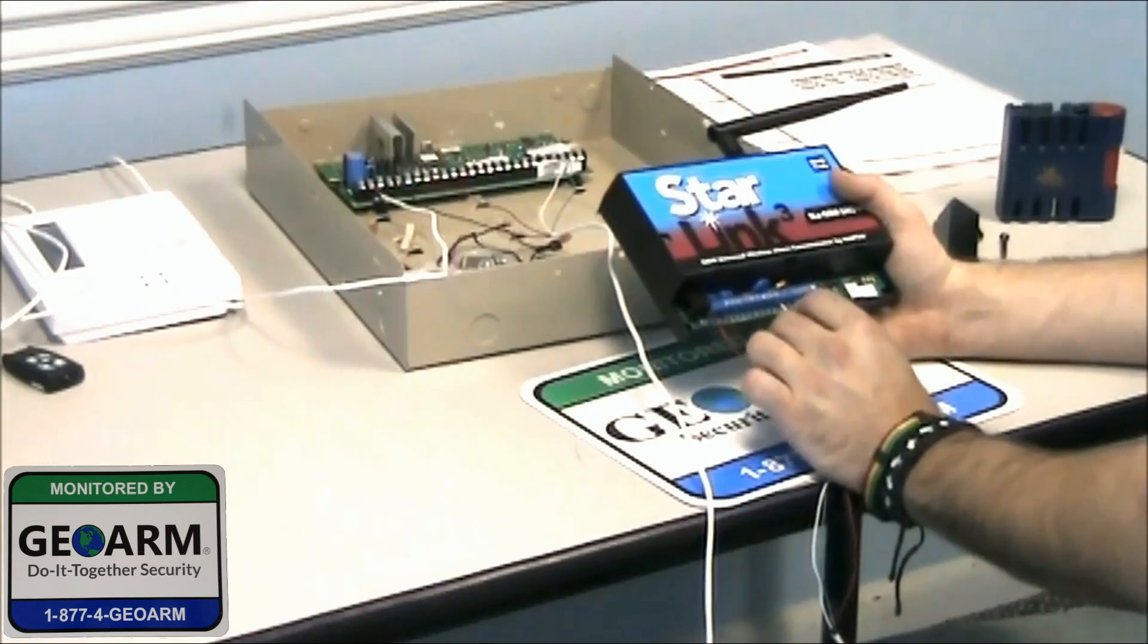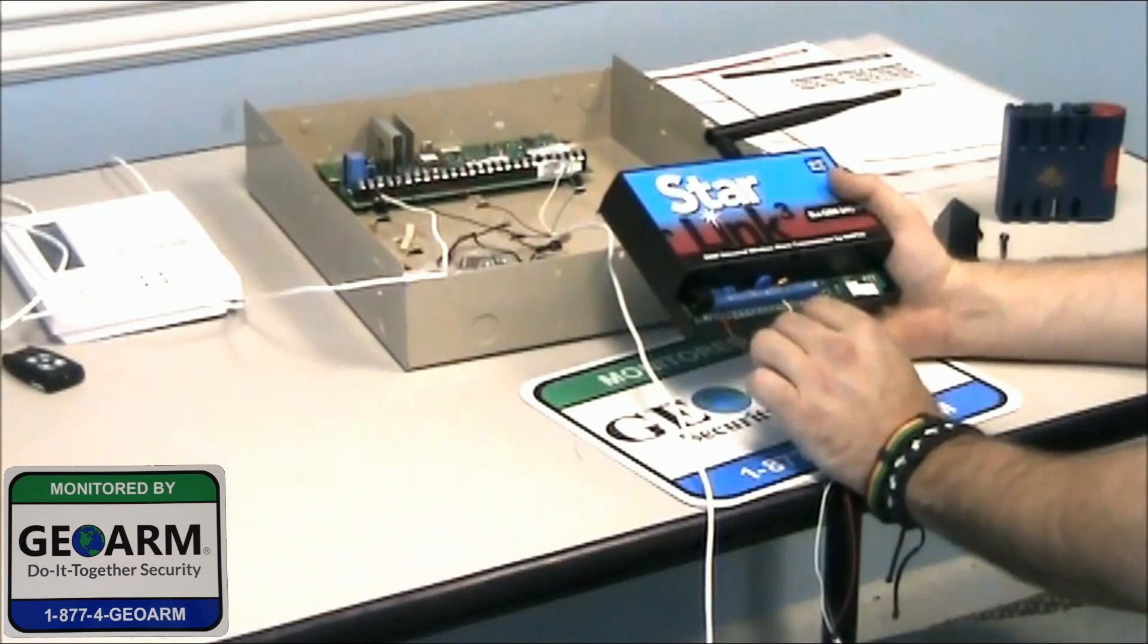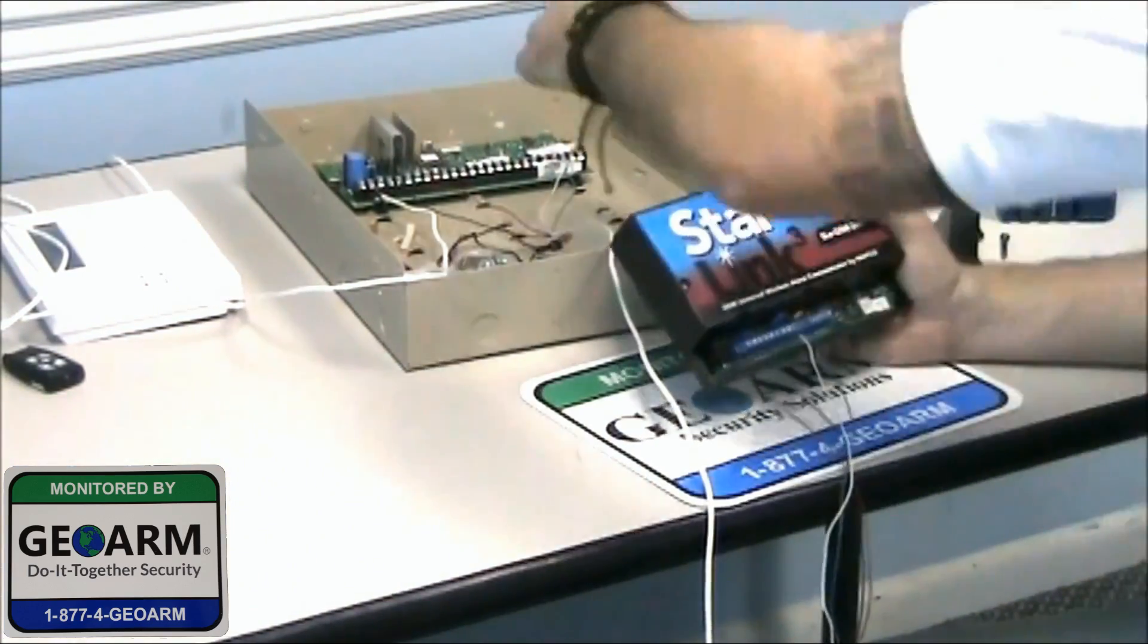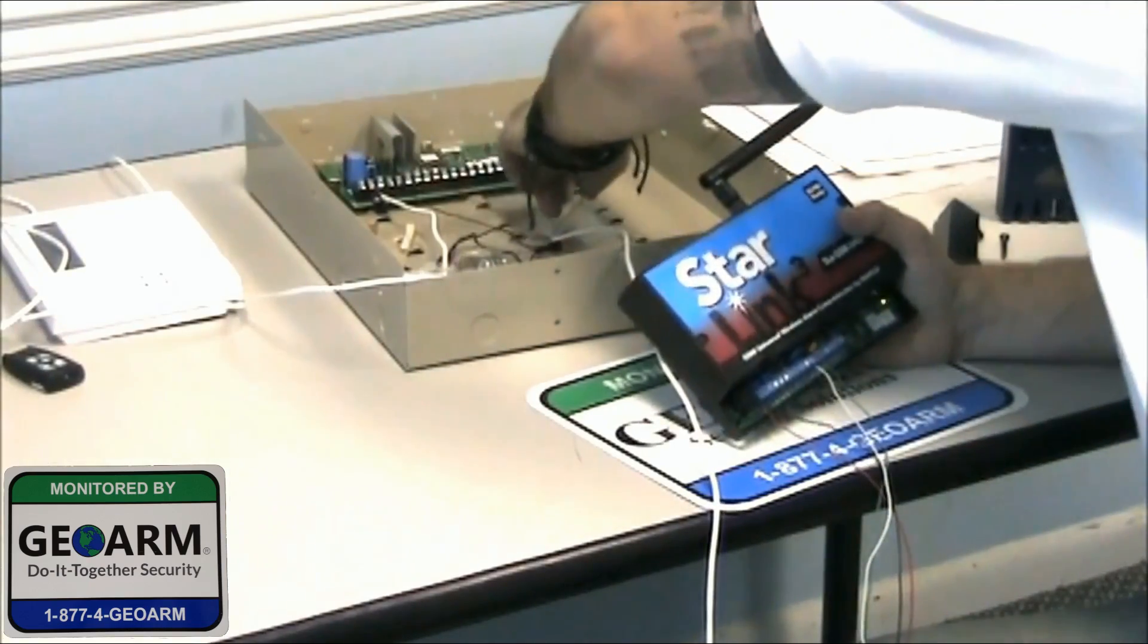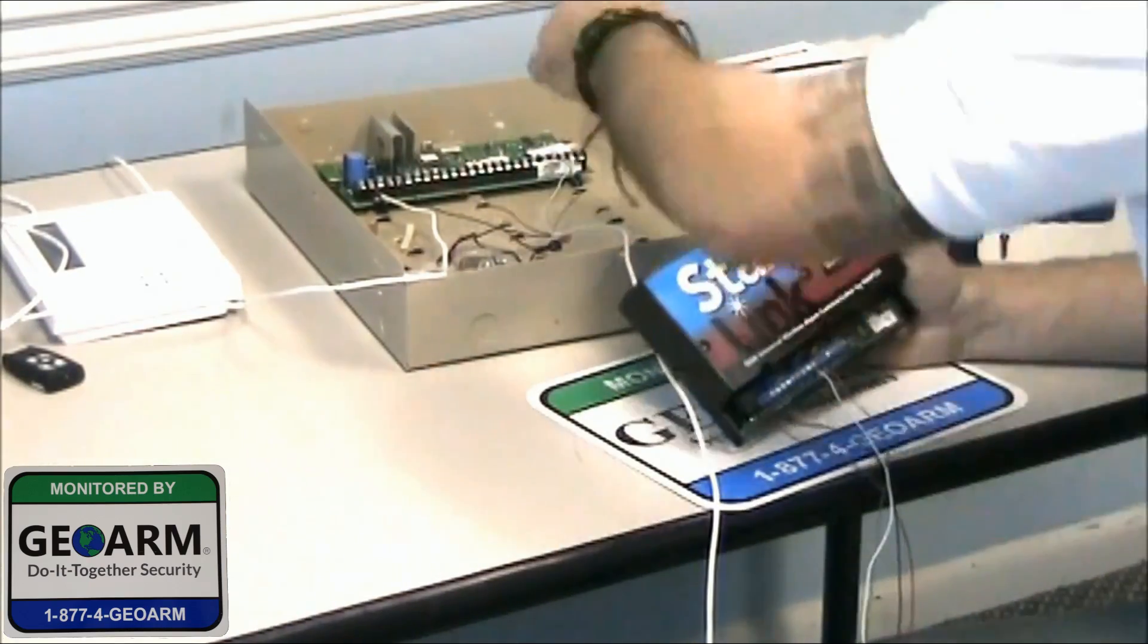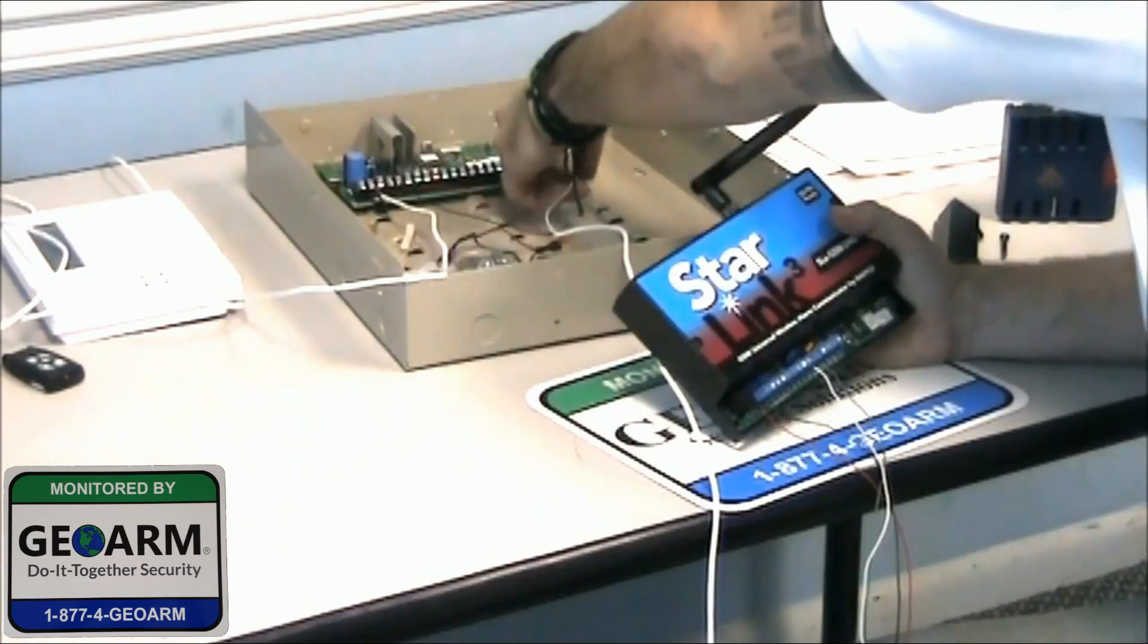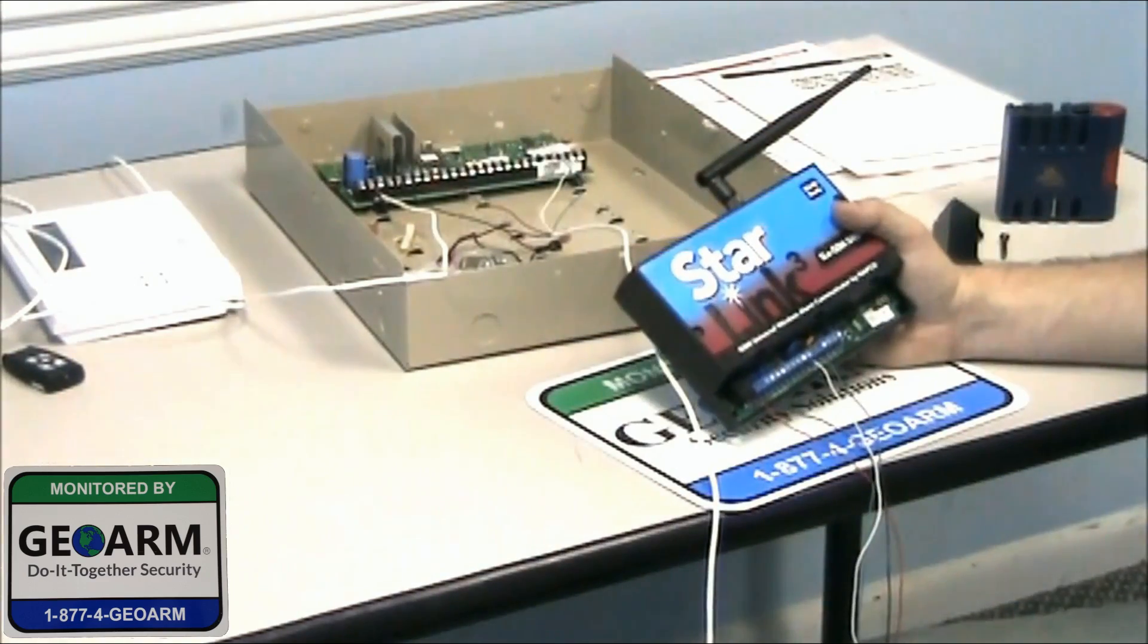panel ring, we're using a white wire and panel tip, we're using a green wire. Panel ring is going to run into terminal number 24 on the panel. And panel tip is going to run into terminal number 23 on the panel. And that's how you're going to wire it.